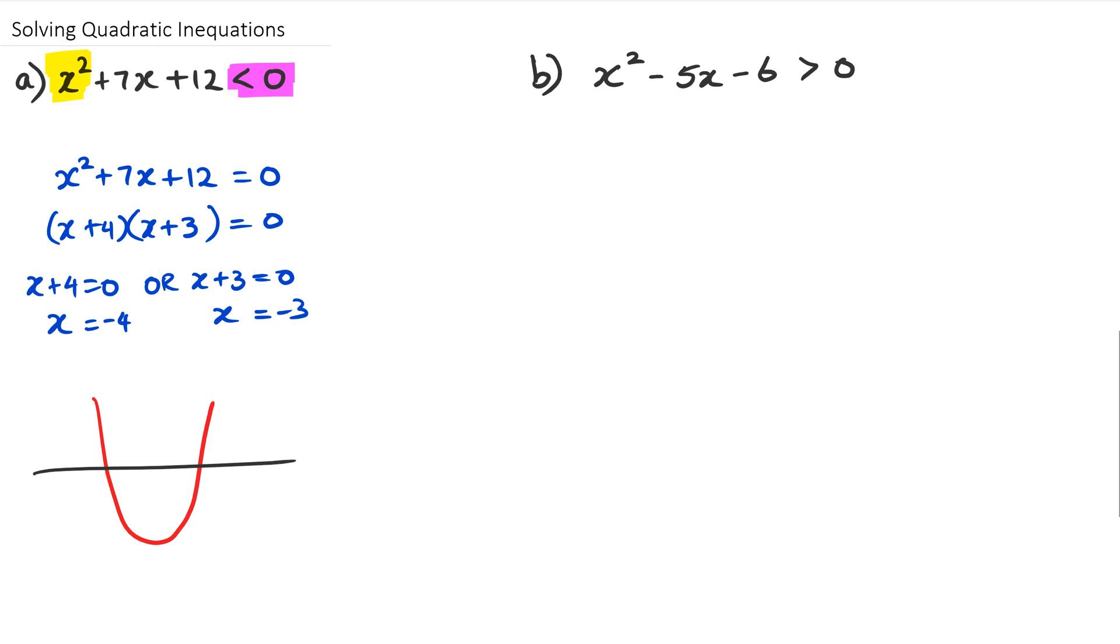You're going to have the parabola actually going through two points. Now how do I know it's actually going through two points? Well, the reason is because there's actually two x-intercepts there.